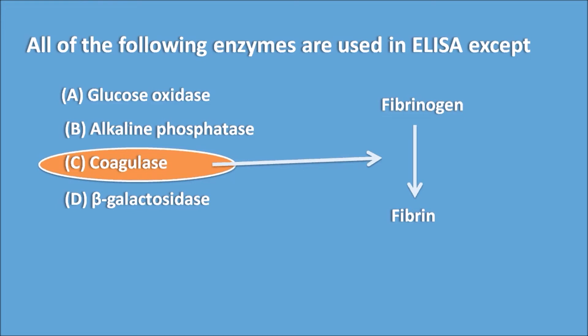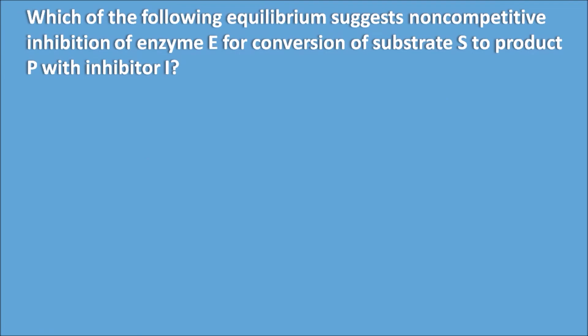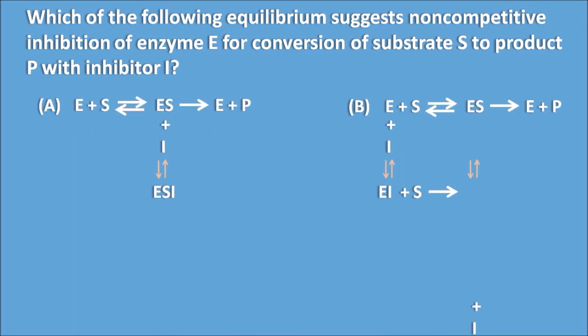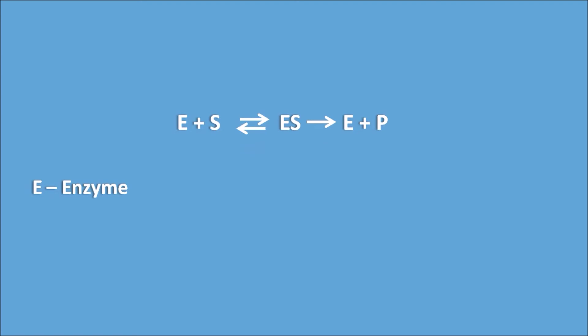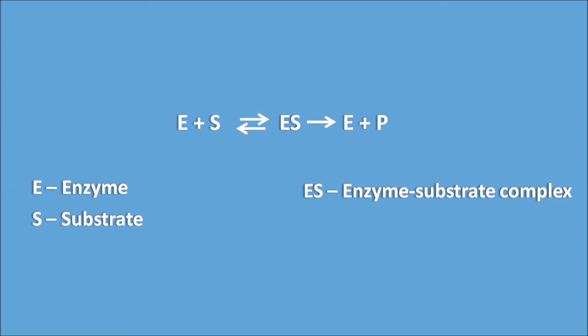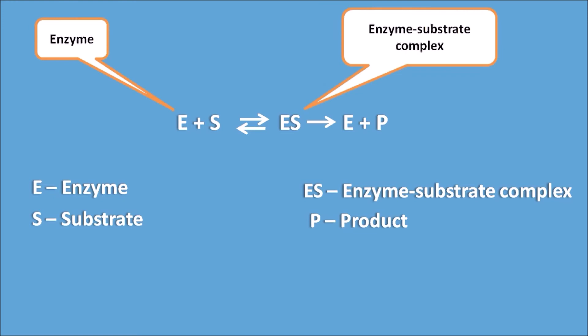Which of the following equilibria represents non-competitive inhibition of an enzyme E for conversion of substrate S to product P with inhibitor I? The right answer is Option B, meaning the inhibitor inhibits both the enzyme as well as the enzyme-substrate complex. In the basic equation, enzyme reacts with substrate to give the enzyme-substrate complex, which then gives enzyme plus product. E is the enzyme, S is the substrate, ES is the enzyme-substrate complex, and P is the product.